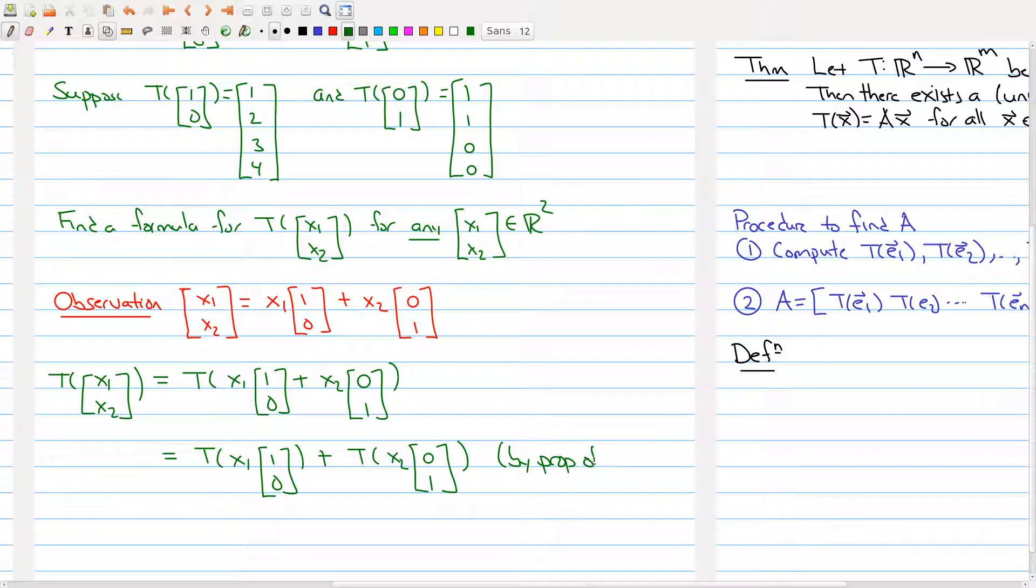So by the properties of linear transformations. And then again, we're going to use another property of linear transformation because the x1 and x2 are scalars. So this is equal to x1 T times where it sends the first vector, plus x2 times where it sends the second vector. Again, by the properties of a linear transformation.